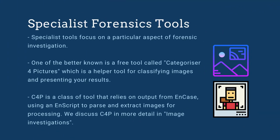Specialist forensic tools. Specialist tools focus on a particular aspect of forensic investigation, for example categorizing images or recovering internet artifacts. The range of tools and software is vast, including commercial and free offerings. One of the better known is a free tool called Categorizer for Pictures, which is a helper tool for classifying images and presenting your results. C4P is a class of tool that relies on output from EnCase, using an EnScript to parse and extract images for processing. We discuss C4P in more detail in image investigations.